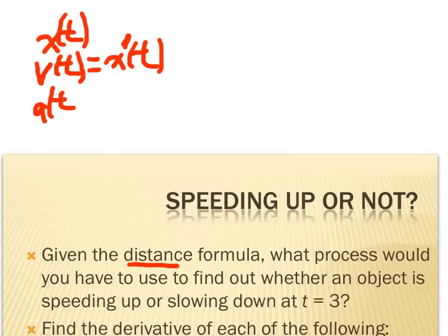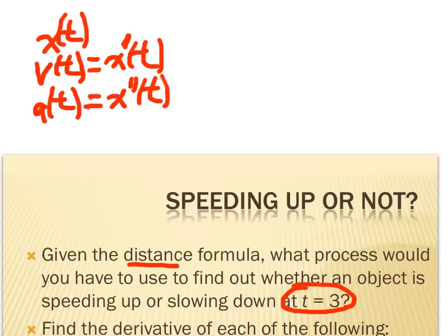I also need the acceleration, which means I need the second derivative of that same equation. As long as I can derive twice, I can come up with both the velocity and acceleration. But I need to know what's happening at t equals 3, so I actually need to plug 3 into both equations and compare the results — plug 3 into velocity, into acceleration, and compare the signs.